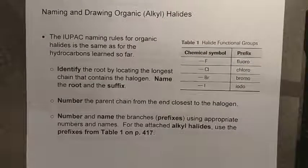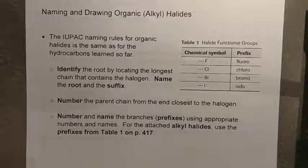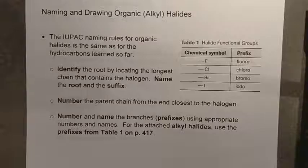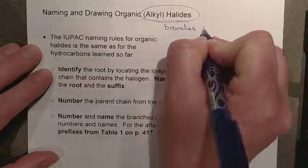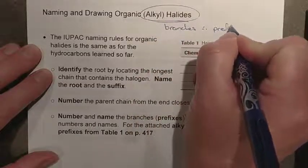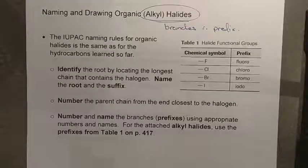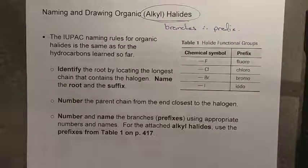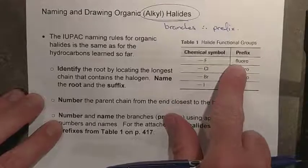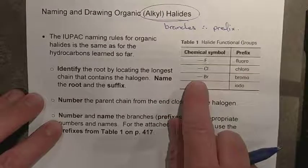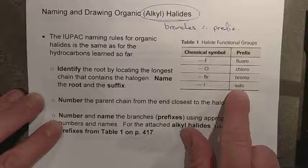How do we name and draw these things? Organic halides, or alkyl halides, are going to be named exactly the same way you've named any alkane, alkene, alkyne, benzene, or cyclic structure — all of that stays the same. Alkyl halides can only ever be branches, so they can only ever be a prefix within the name. Our prefixes so far have been hydrocarbon groups such as methyl, ethyl, propyl, and butyl. Now our prefixes can be expanded: fluorine uses fluoro, chlorine uses chloro, bromine uses bromo, and iodine uses iodo.